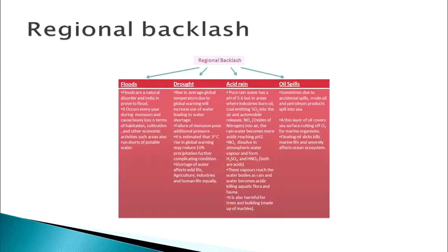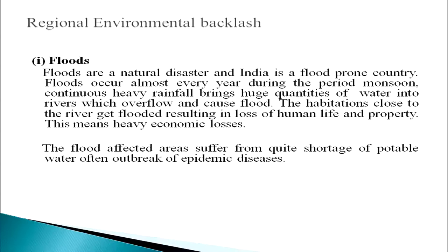Let us review some examples of backlash at the regional level. Regional backlash: one is flood. Floods are a natural disaster and India is a flood-prone country; floods occur almost every year during the monsoon period. Continuously heavy rain brings huge quantities of water into rivers which overflow and cause floods. Habitations close to the river get flooded, resulting in loss of human life and property and heavy economic losses. The flood-affected areas suffer from shortage of potable water and often outbreak of epidemic diseases.